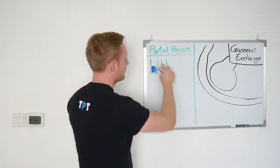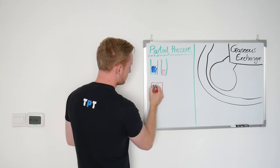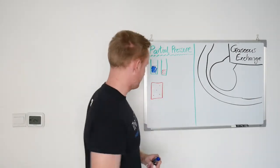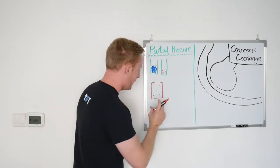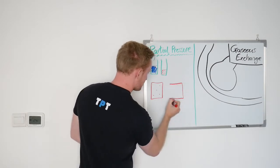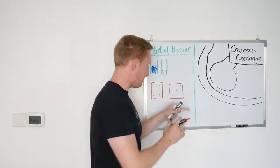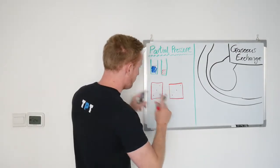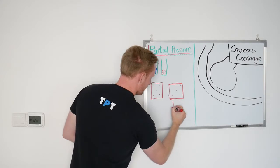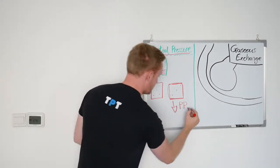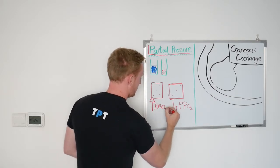The same principle works with partial pressure. Let's say we've got a box with five molecules of oxygen inside it — the rest of it is filled up with oxygen. In the same size box next to it, let's say we've only got three molecules of oxygen inside; the rest of the space is still filled up, just with different stuff. The way we refer this to partial pressure is that we say this box here has a lower partial pressure — PP — of oxygen compared to the one on the left, which has a higher partial pressure of oxygen.